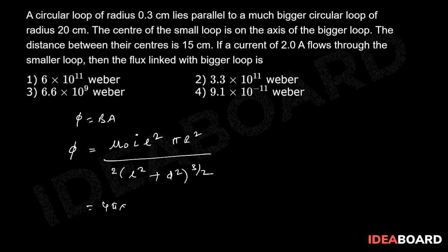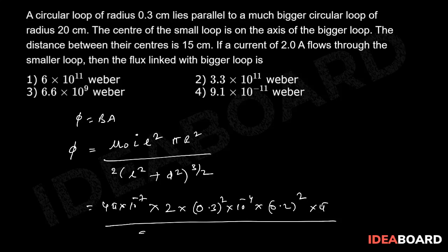That is equal to 4 pi into 10 power minus 7 into 2 into 0.3 whole square into 10 power minus 4 into 0.2 whole square into pi divided by 2 into 0.3 into 10 power minus 2 whole square plus 15 into 10 power minus 2 whole square whole power 3 by 2.